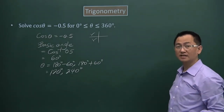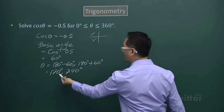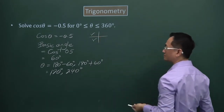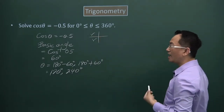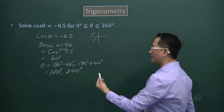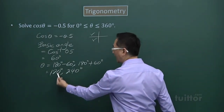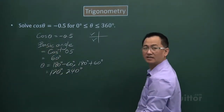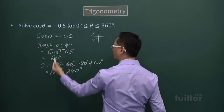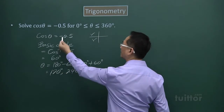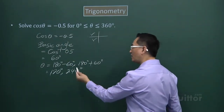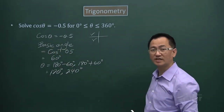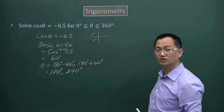Remember the two checks. First, are 120° and 240° within the given range? Yes, they are. Second, plug each back in: cos 120° = −0.5 ✓, and cos 240° = −0.5 ✓. These are our two verified answers.